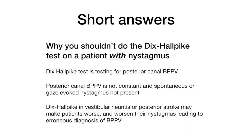So why not do the Dix-Hallpike test on patients who have ongoing continuous vertigo and nystagmus? The Dix-Hallpike test is meant to diagnose posterior canal BPPV. Patients with posterior canal BPPV don't have ongoing continuous vertigo or spontaneous or gaze-evoked nystagmus, so the diagnosis is already ruled out in patients with ongoing significant vertigo and nystagmus. If you subjected a patient with vestibular neuritis or posterior circulation stroke to the Dix-Hallpike test, you might worsen their symptoms and see increased nystagmus, potentially misdiagnosing them with BPPV and attempting an Epley maneuver, which won't help — and you'd miss the correct diagnosis, with potentially dire consequences in the case of stroke.